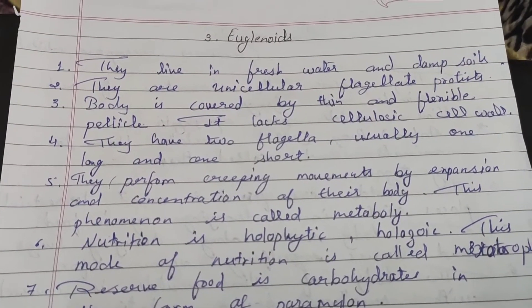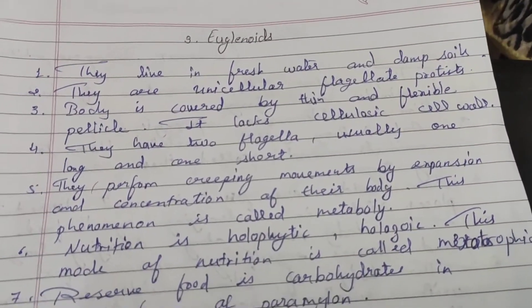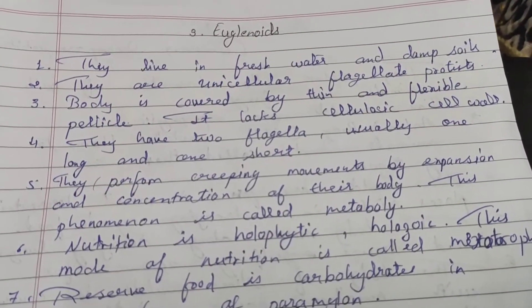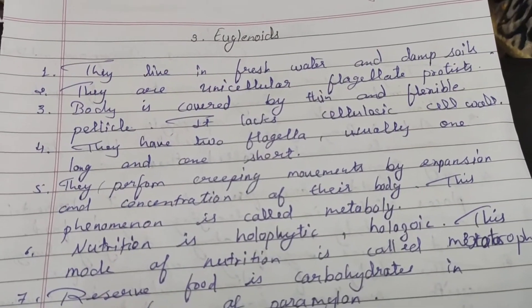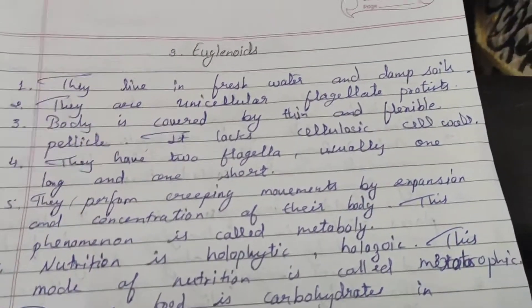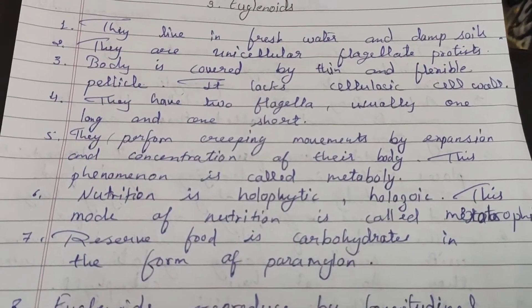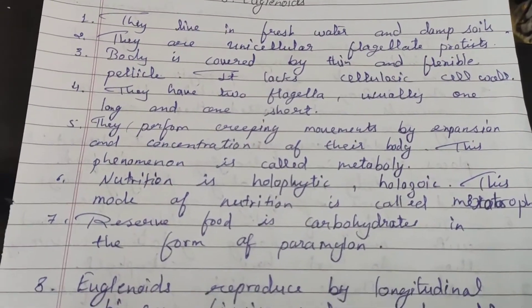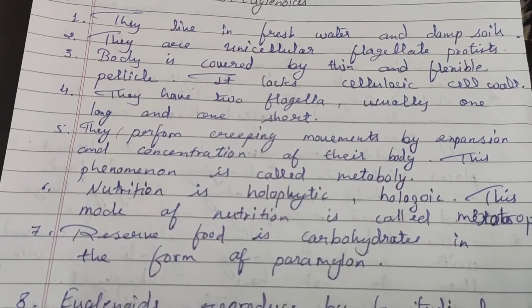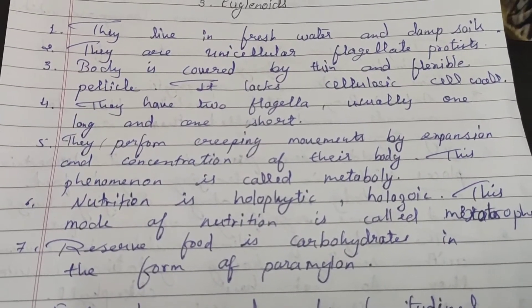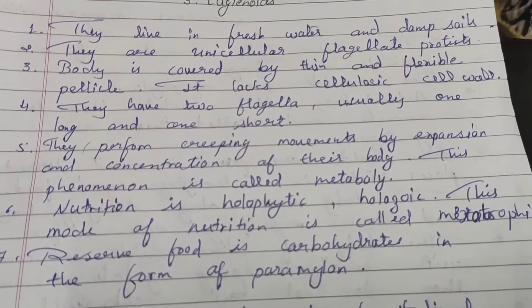Usually one flagellum is long and one is short. We will not call them heterokont. Unlike dinoflagellates, where the two flagella differ in their origin — one growing transversely and the other vertically — here the two flagella simply differ in size.